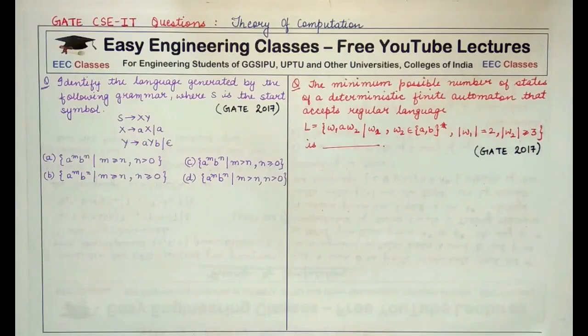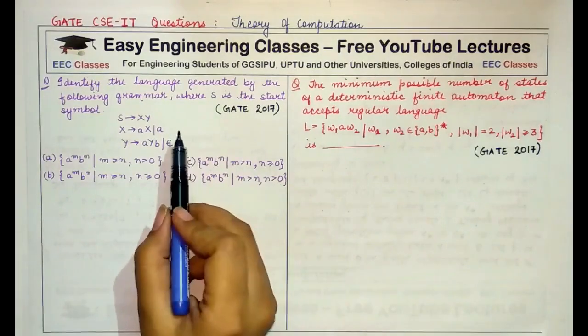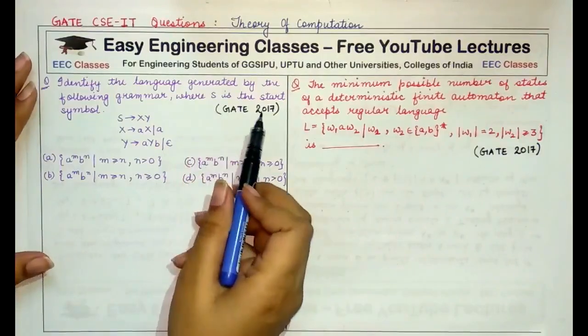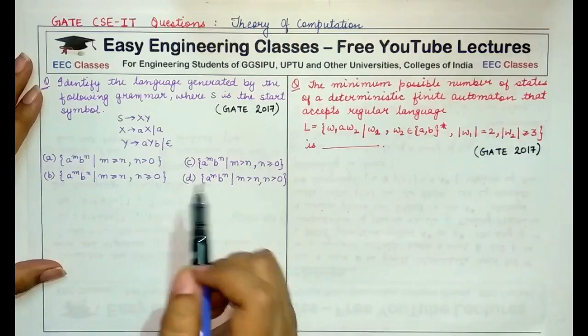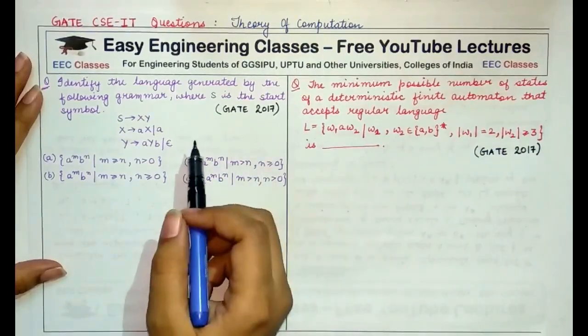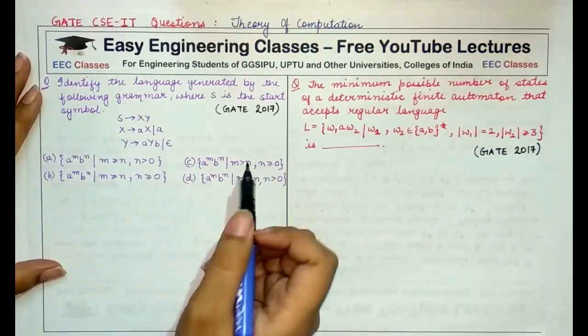The first question is, identify the language generated by the following grammar where S is the start symbol. This is the grammar that has been given to you and the options are provided. Both of these questions came in GATE 2017 paper.